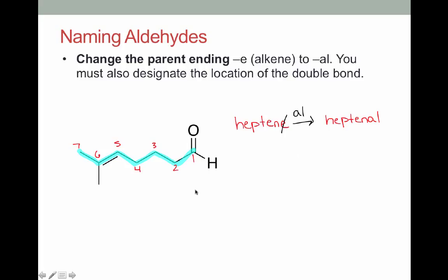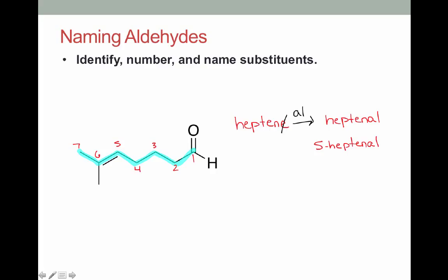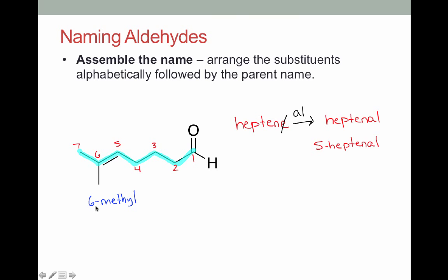We also need to specify where exactly that carbon-carbon double bond is — it's between carbons five and six, so we're going to say 5-heptenal. We don't need to specify where the aldehyde is because we know that's at carbon one. We need to identify, number, and name our substituents. In this case we only have one substituent, and that is a methyl group on carbon six. Now all that's left is to assemble our name: 6-methyl-5-heptenal. And that's how we deal with alkenes in our compound.